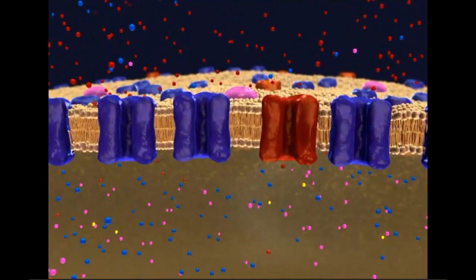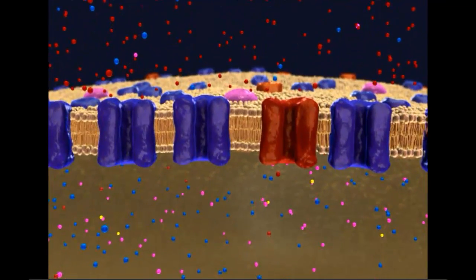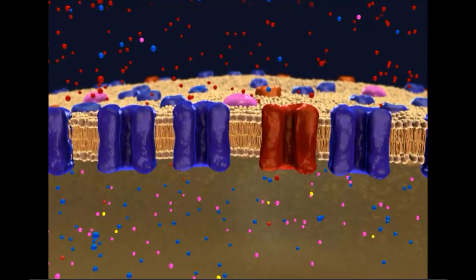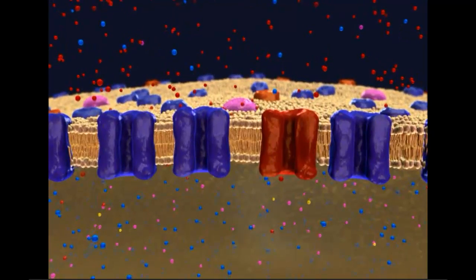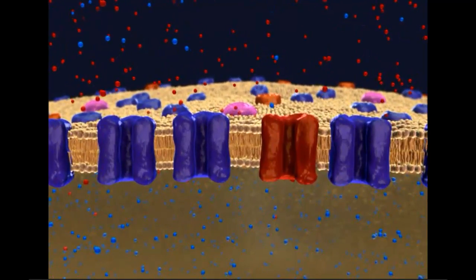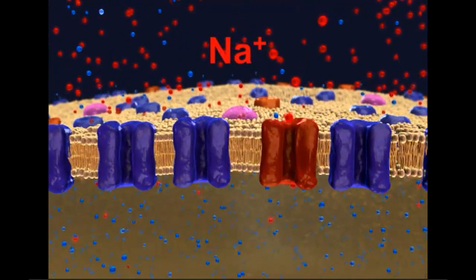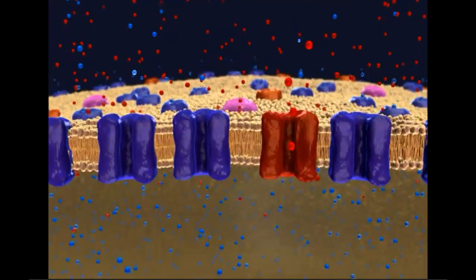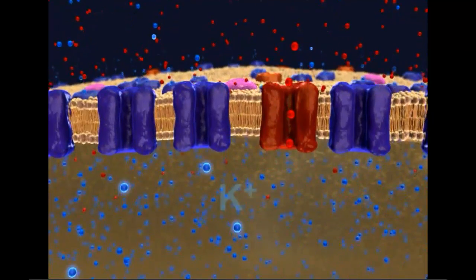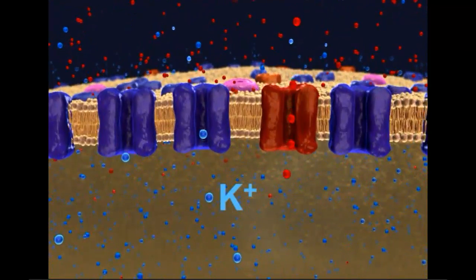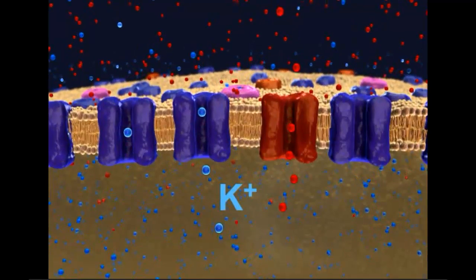The resting membrane potential depends on two factors. First, it depends on the presence of sodium and potassium gradients across the plasma membrane. Specifically, there are more sodium ions outside the neuron than inside, and more potassium ions inside the neuron than outside.